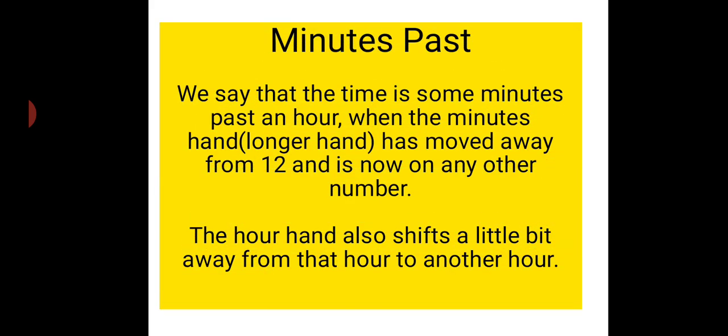Now we are going to look at minutes past. We say that the time is some minutes past an hour when the minute hand (that's the longer hand) has moved away from 12 and is now on any other number. It can be on 1, 2, or 3. If it's on 1 it's 5 minutes, on 2 it's 10 minutes. Are you getting what I'm saying?